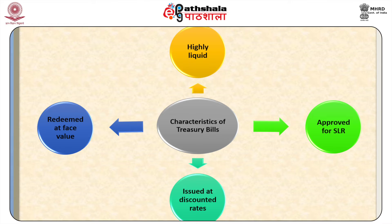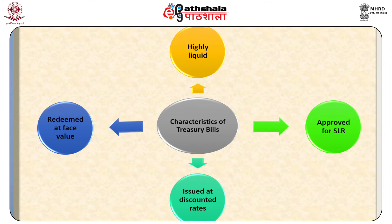For example, a 91-day treasury bill of Rs. 100 face value may be issued at Rs. 97, that is at a discount of Rs. 3 to its face value. The buyer would receive the face value of Rs. 100 on the due date. The difference between the issue price and maturity value of Rs. 3 is a return to the investor and works out to be 12.40% per annum.